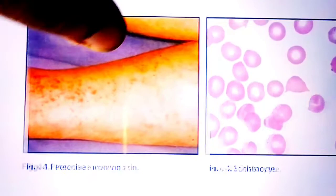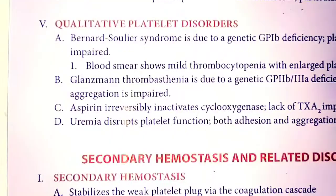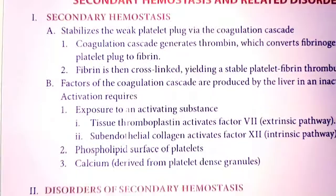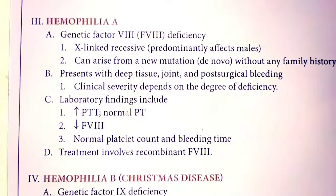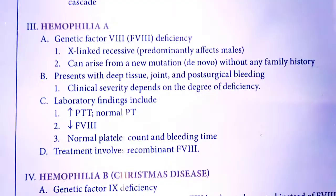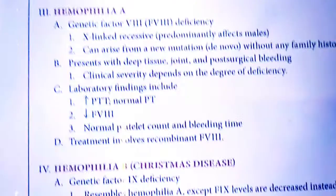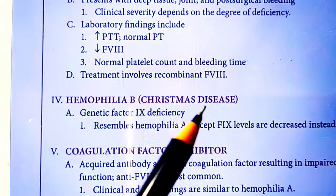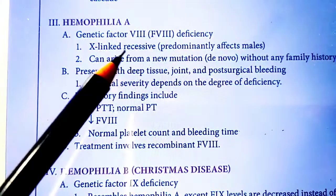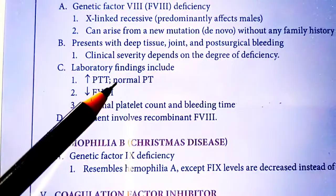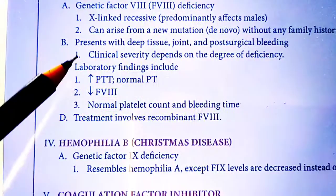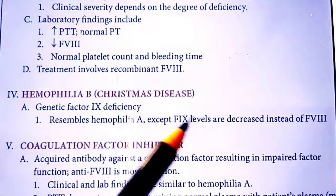Now we discuss secondary hemostasis and its related disorders. The first is Hemophilia A, due to deficiency of Factor VIII. Hemophilia B is due to Factor IX deficiency, also known as Christmas disease. Both are X-linked recessive diseases. Laboratory findings show increased PTT (partial thromboplastin time) and decreased Factor VIII in Hemophilia A, or decreased Factor IX in Hemophilia B.